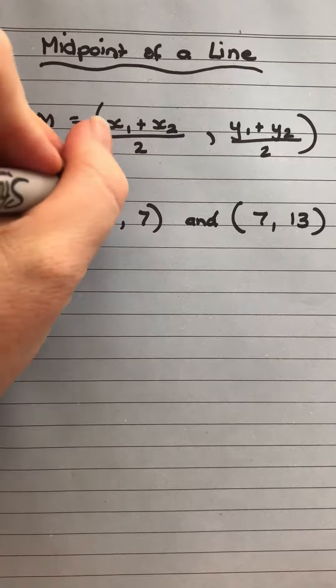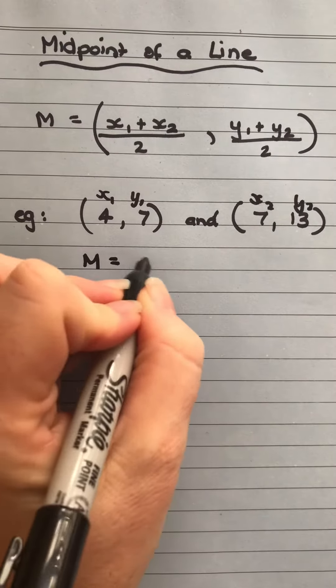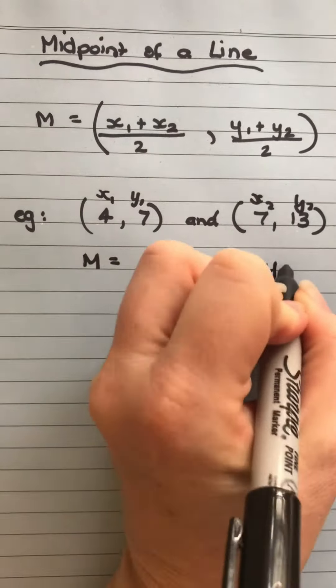First I'm going to put my x1, y1, x2, y2 on the top, and then I'm going to write my rule, and now I'm going to substitute in what I've got.